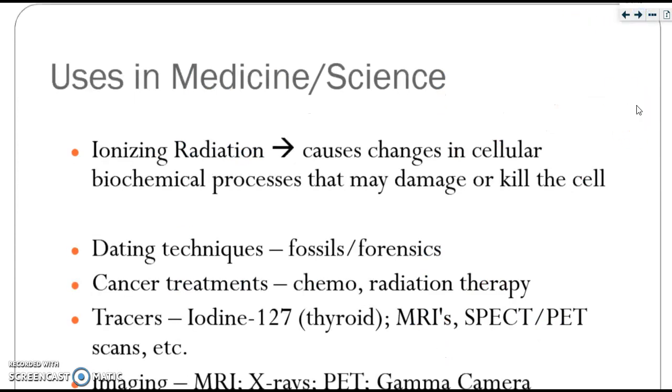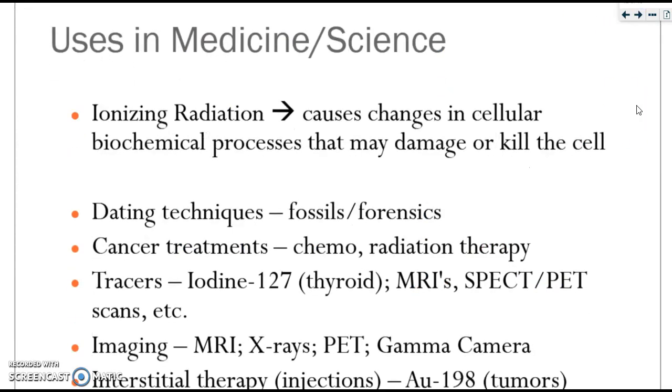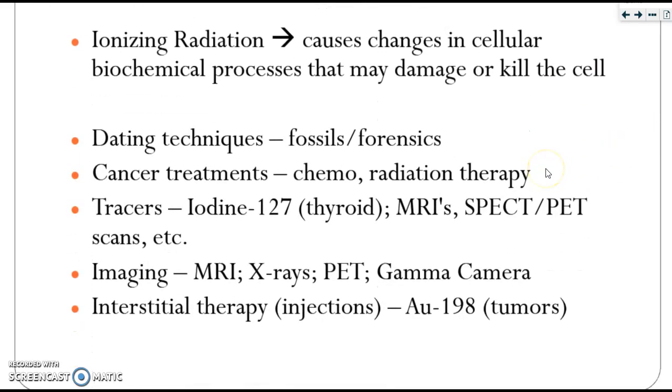The next part of the chapter is all about uses of nuclear medicine and how nuclear chemistry is used in science. There's a lot of applicable techniques that we see. Ionizing radiation is something that causes changes in cellular biochemical processes that can damage or kill a cell. Therefore, things like radiation therapy or chemotherapy.